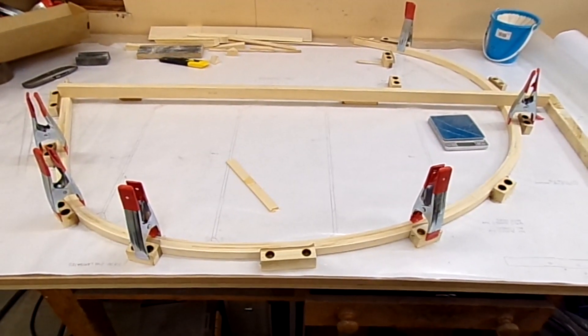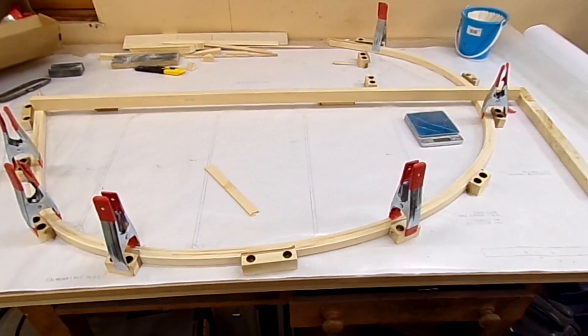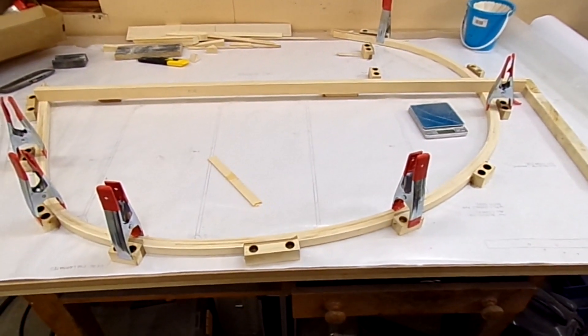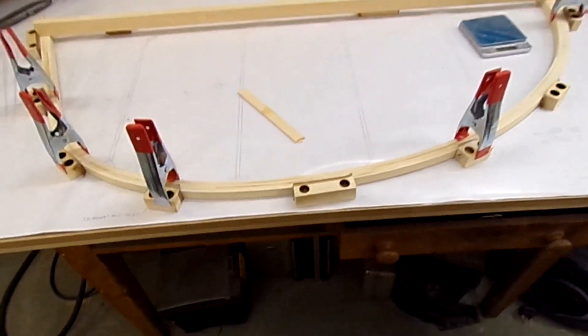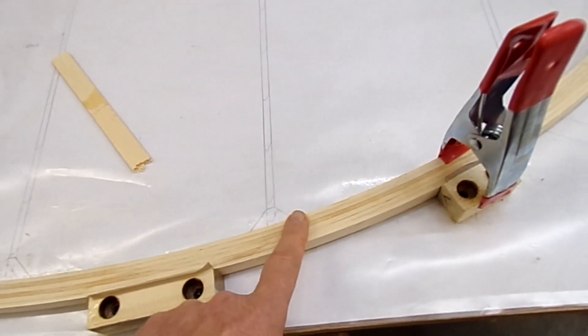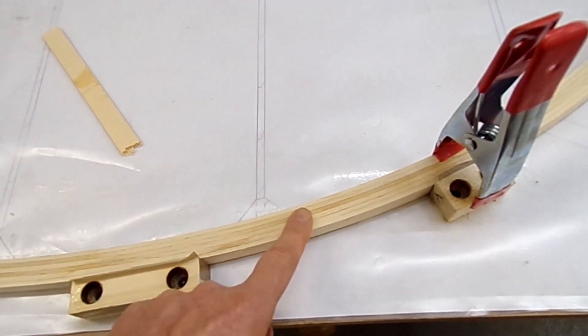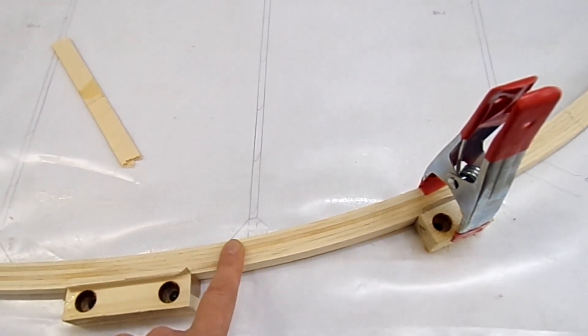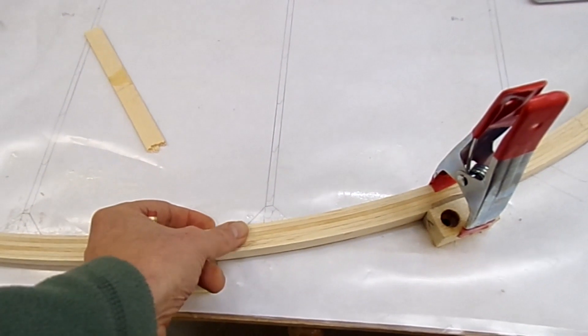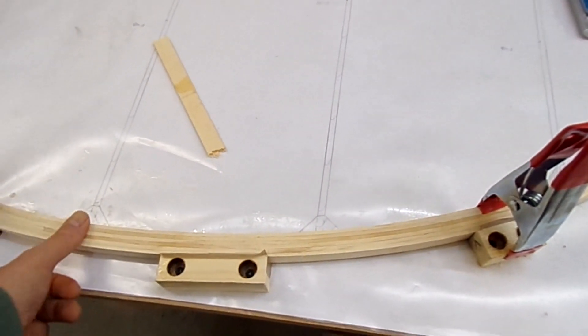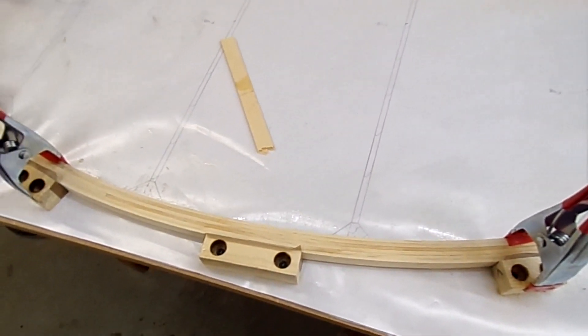Okay, so the trailing edge bow of the rudder we saw laminated in the last episode has been sanded. Came out nice and level, very little sanding needed just to remove the glue. As we found with the laminates in previous episodes they're remarkably consistent.